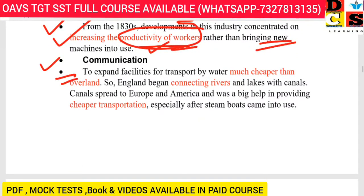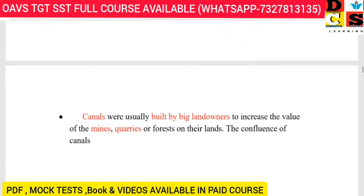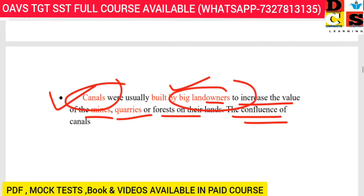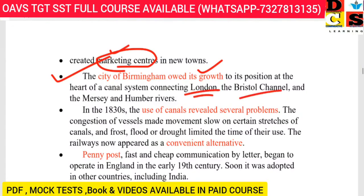Regarding communication and transport: water transport was much cheaper than overland. England expanded its canal system starting from lakes, and canals spread across Europe and America, providing cheaper transportation. The canals were usually built by big landowners to increase the value of mines, quarries, and forests. Birmingham owed its growth to its position at the heart of the canal system, connecting the Bristol Channel system and the Mersey-Humber river system.